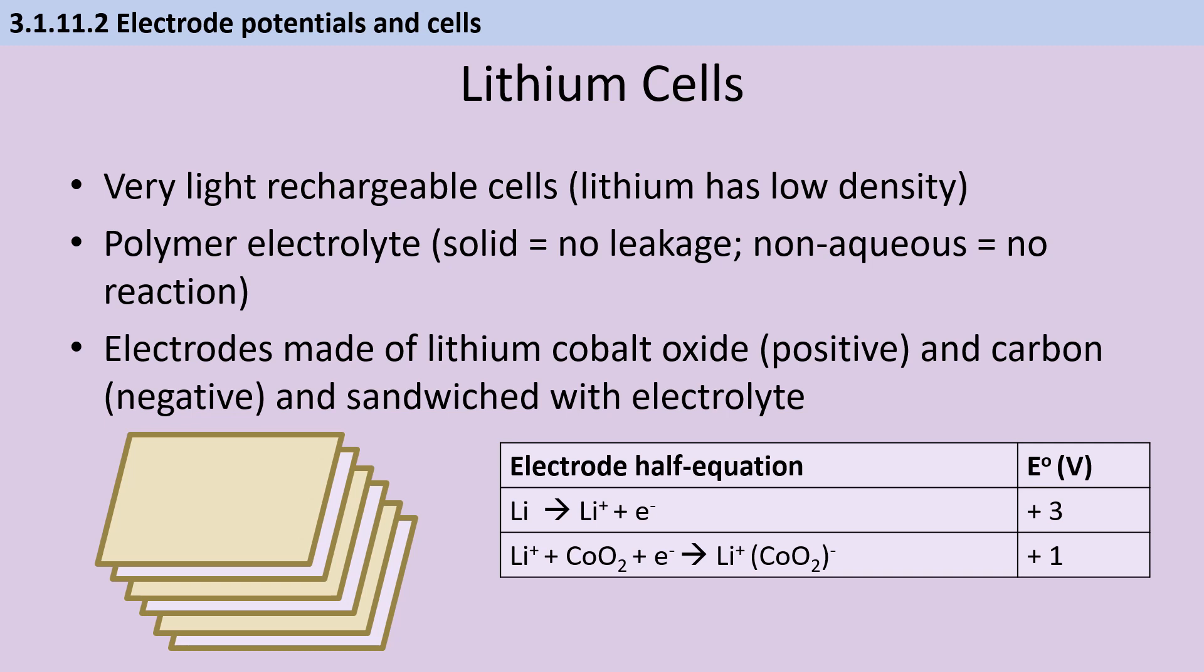Another example of a rechargeable cell is the lithium cell. Be aware that there are several different types, but AQA only asks you about one of them. Lithium cells are very light due to the low density of lithium. They have a solid electrolyte made from a polymer, which prevents leakage and the reaction of lithium with an aqueous electrolyte. The positive electrode is made from lithium cobalt oxide, and the negative electrode is made from carbon. These are sandwiched around the polymer electrolyte.